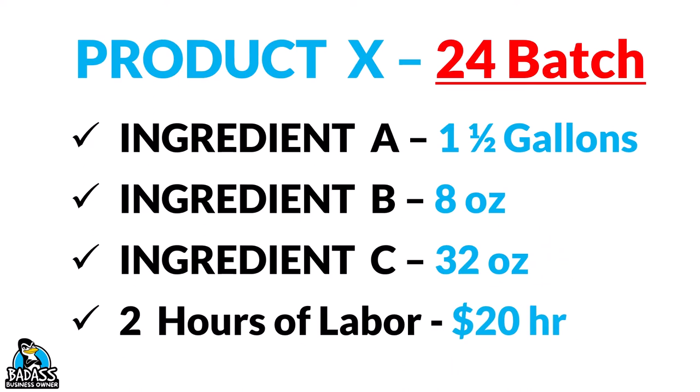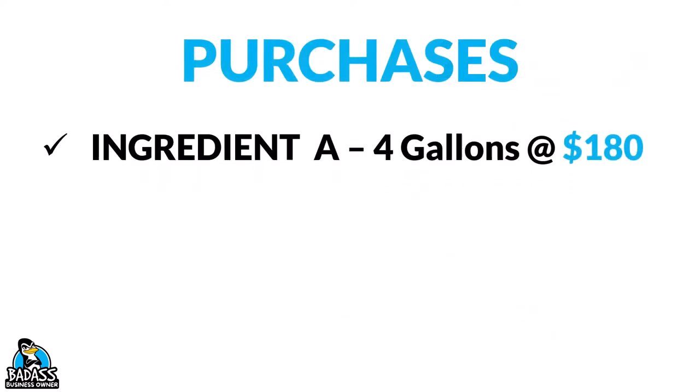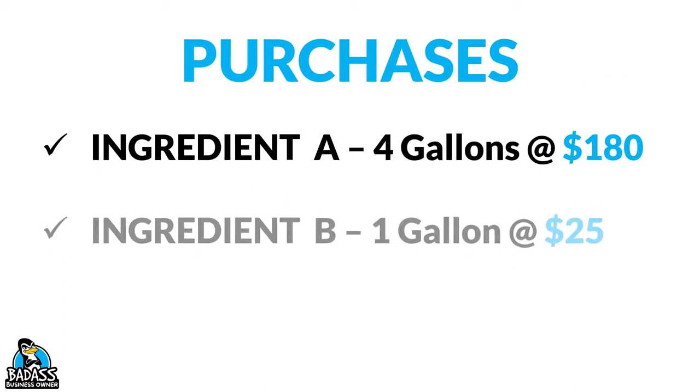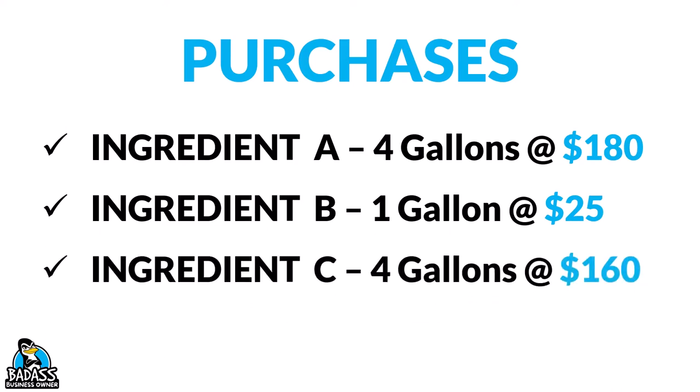So let's take a look at how this will work. First, you have to look at how you purchase each ingredient. Ingredient A is purchased in a four-pack at $180. Ingredient B is sold by the gallon for $25. And Ingredient C is also in a four-pack at $160.